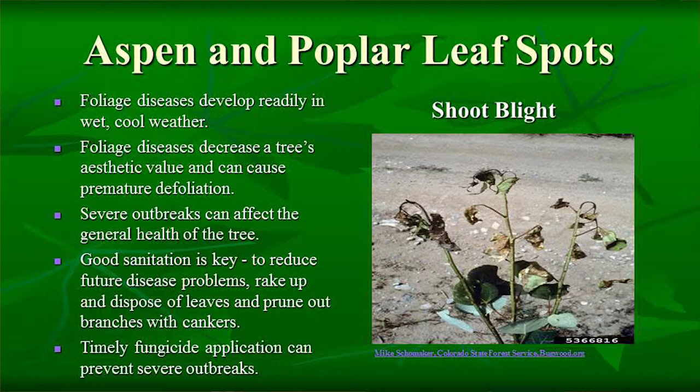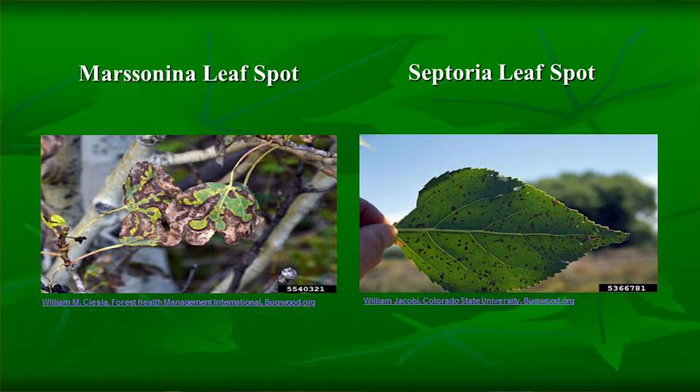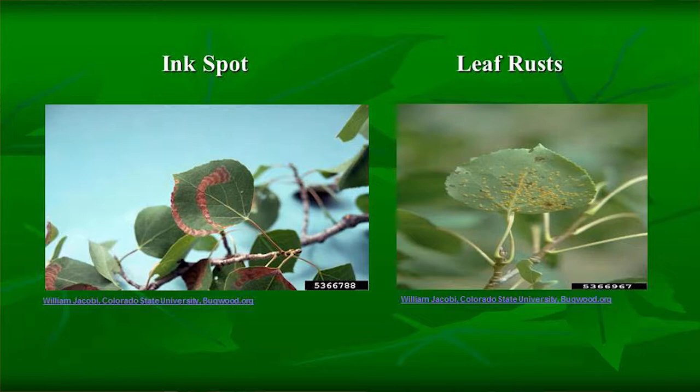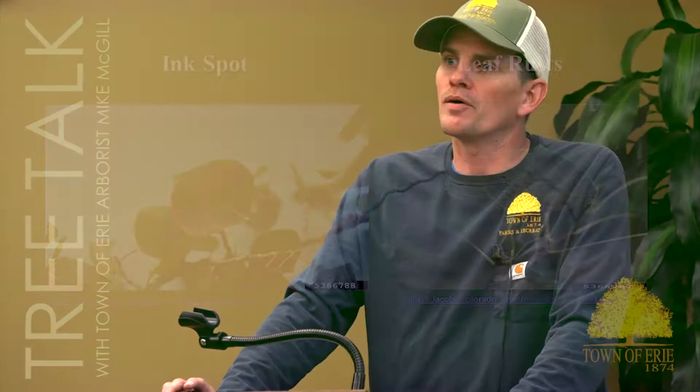Fungicides exist that can prevent severe outbreaks, but personally I don't recommend it. I think not planting aspens is better, and sanitation is a lot more effective — applying fungicide to very large trees is very difficult. There's marssonina leaf spot, septoria leaf spot, ink spot, leaf rust, and numerous others you may notice on your aspen trees. I struggle to find a healthy stand of aspen trees — maybe 20% of the aspens I look at are actually in good shape.